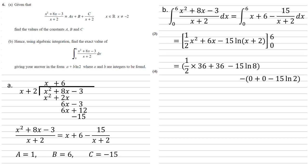So a half times 6 squared, which is 36. Add 6 times 6, which is also 36. Minus 15 log natural of 6 plus 2, which is 8. We're then going to take away our expression with 0 substituted in.